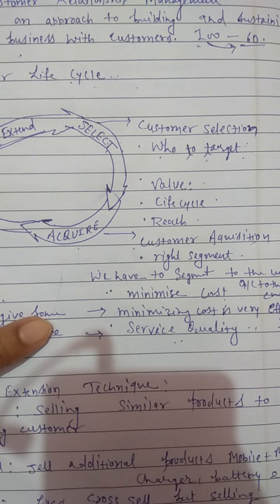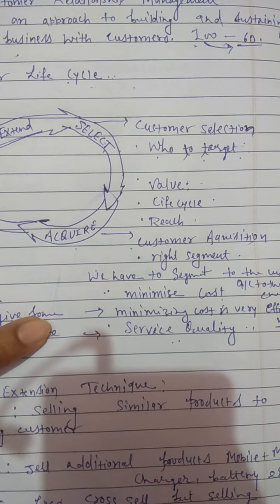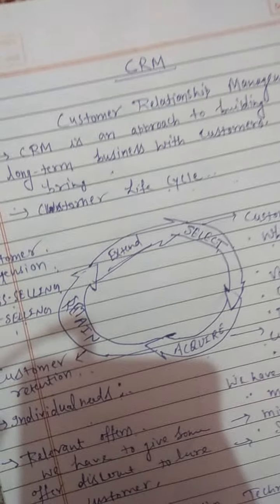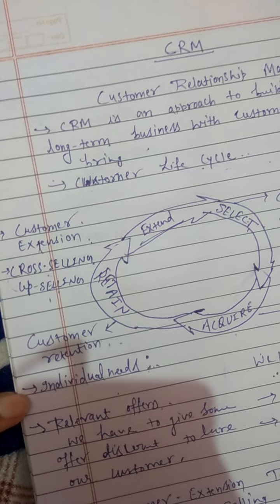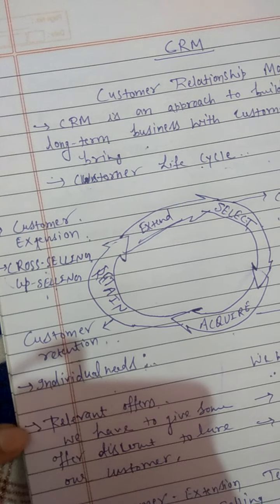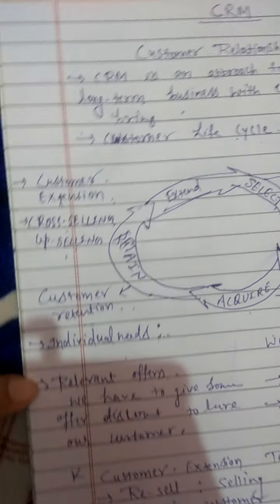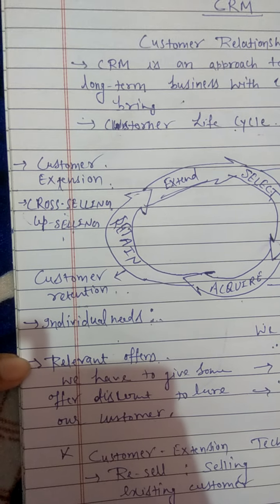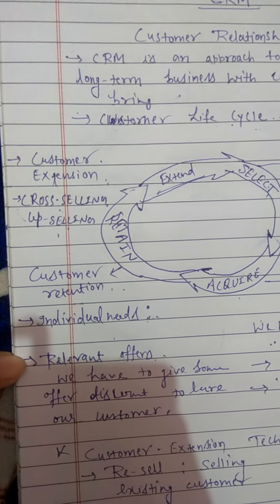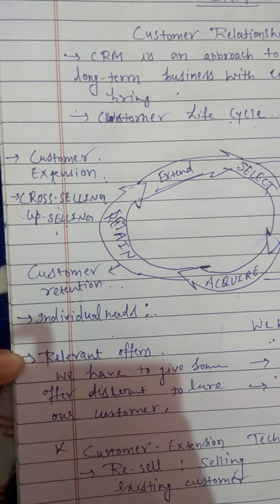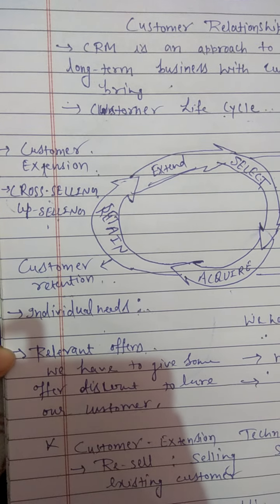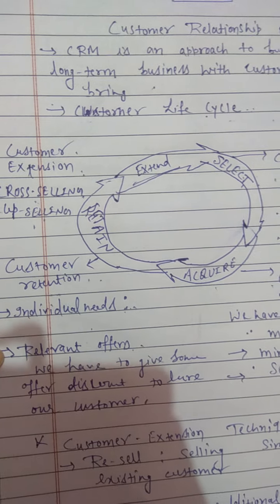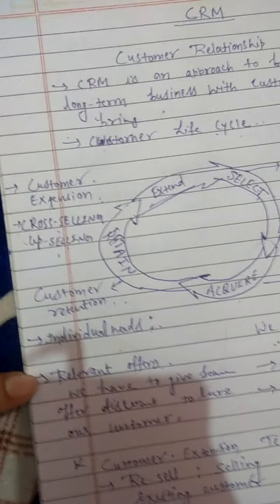Quality plays a very important role in acquiring customers. The third step is Retain — customer retention means taking care of individual needs, understanding what type of product they want, and retaining the customer by giving offers and discounts.